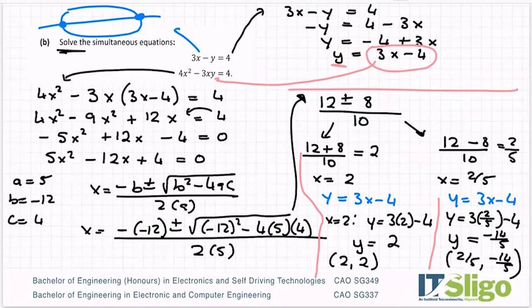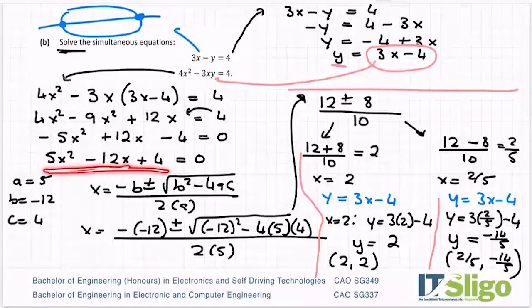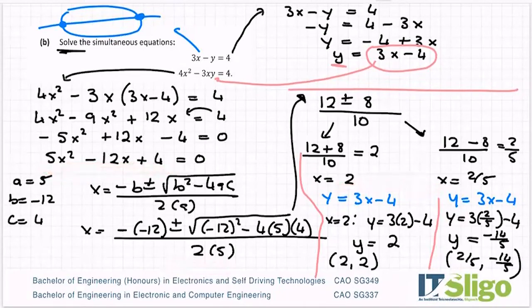So that is how you solve a pair of simultaneous equations with the squares in them. Write them in terms of one of the letters, the linear equation, sub it into the one with the squares, form your quadratic, solve it to find the x values or the y values depending, and sub it in then to find the other letter. So these take practice and are very important.